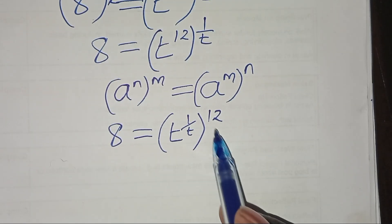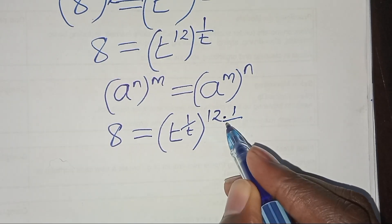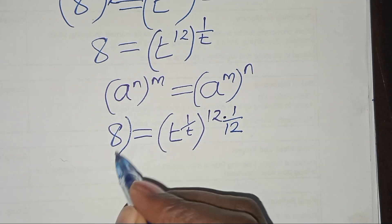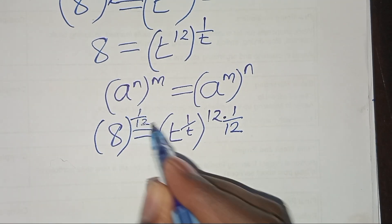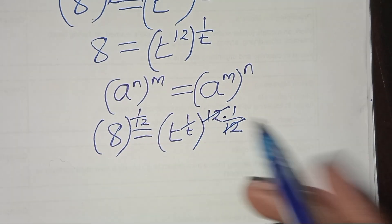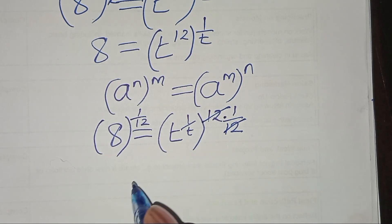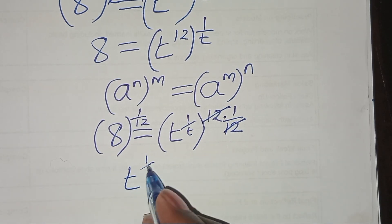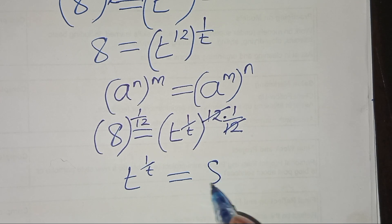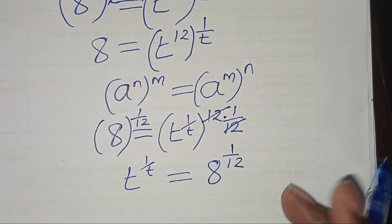The second step from here: let's multiply both sides by 1 over 12. Simplifying, we can write this as t to the power (1 over t) is equal to 8 to the power (1 over 12).